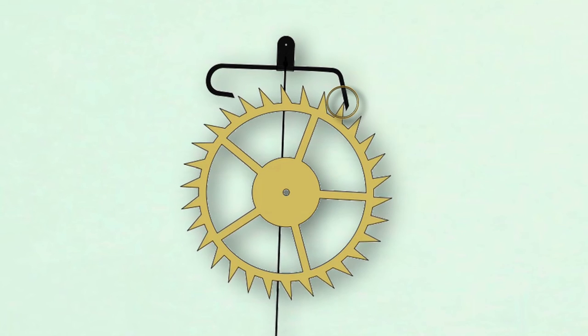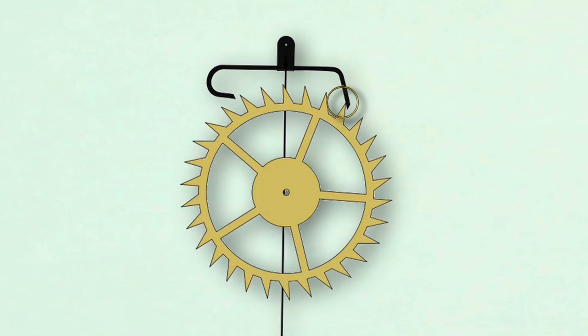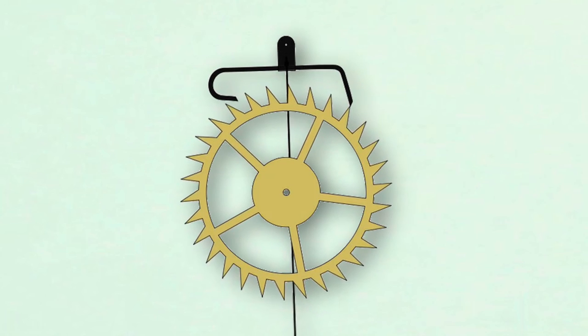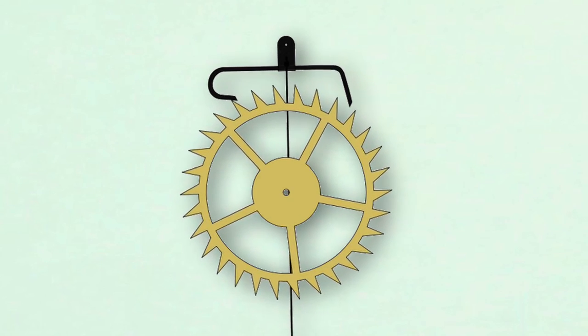The overswing of the pendulum momentarily pushes the escape wheel tooth that just landed on the pallet in the reverse direction, creating the recoil, and the cycle starts over again.